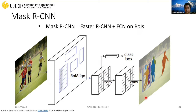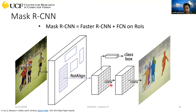ROI Align extracts features from the feature map and converts them to a fixed resolution. Once you have this fixed resolution, you perform semantic segmentation similar to the fully convolutional architecture — the U-Net architecture. This gives you the semantic map for that particular object. Going back to ROI pooling: given a feature map and a proposal, you extract features, but there was a loss of information. You had to quantize the coordinates to perfectly match the feature map coordinates.